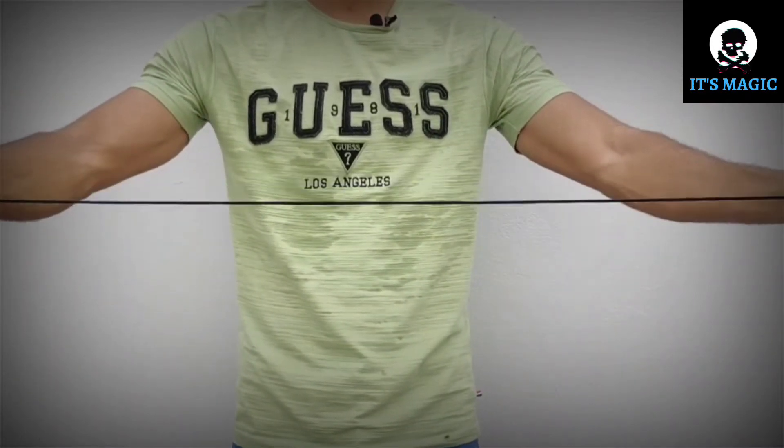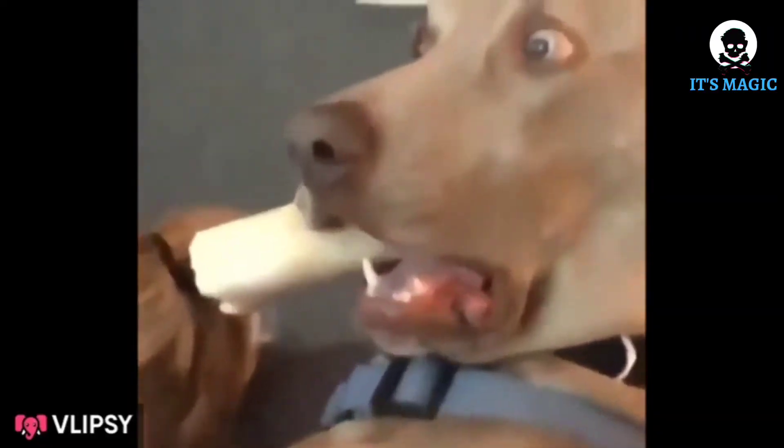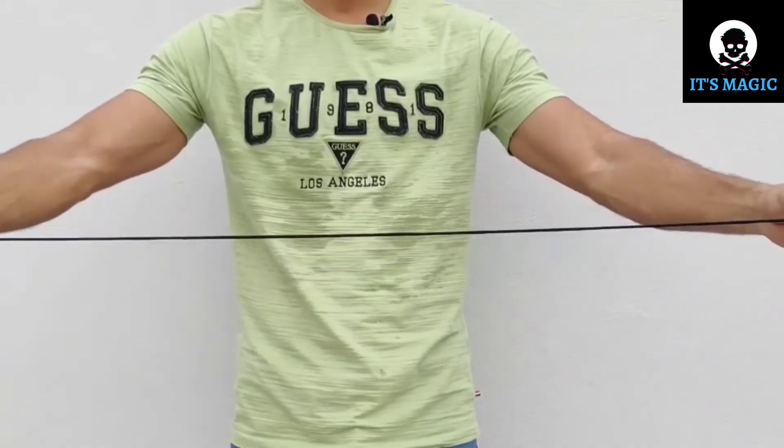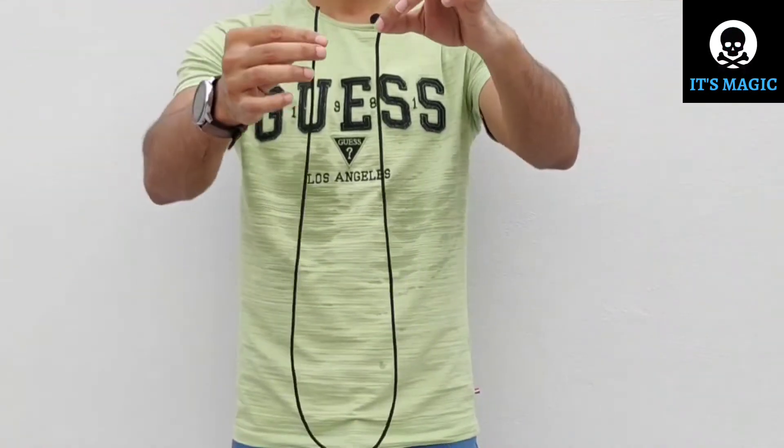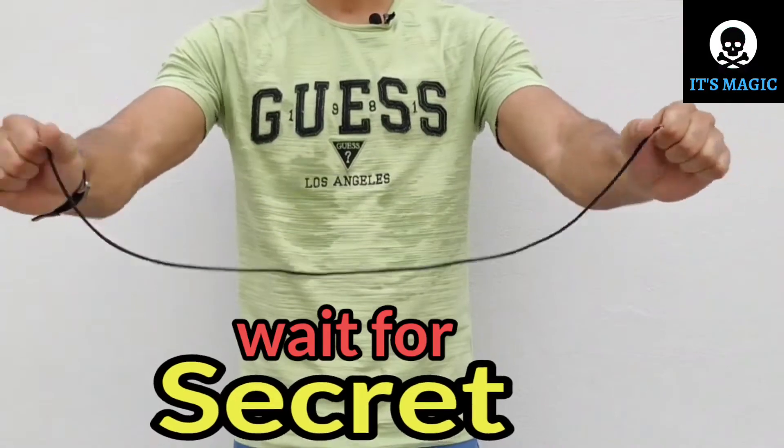And you can see that the rope has become whole again, just like before. See, the rope is whole again. There is no cut in the middle.